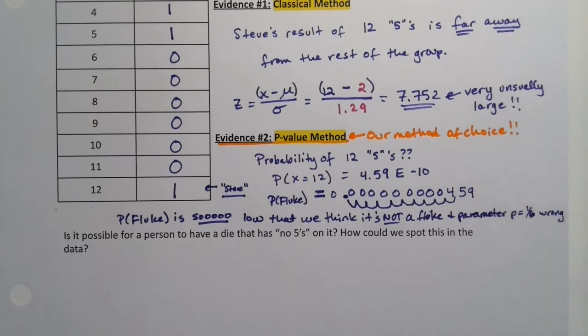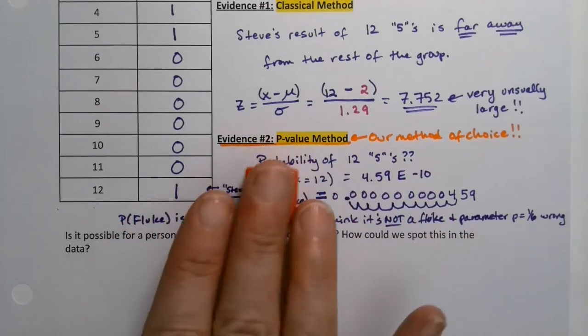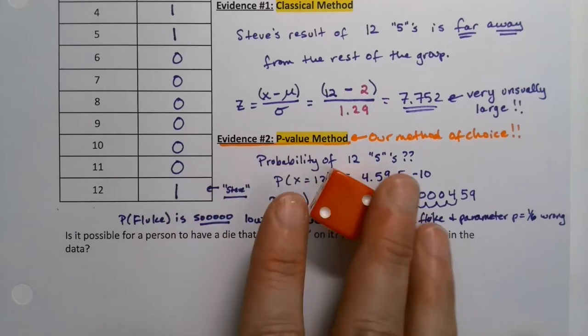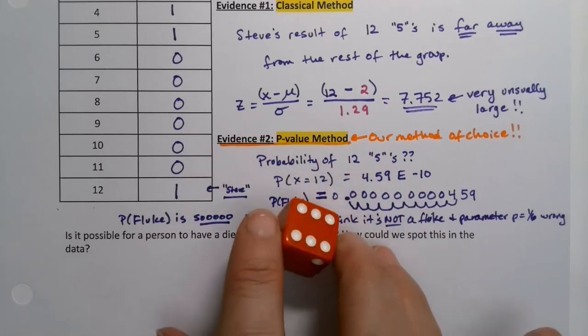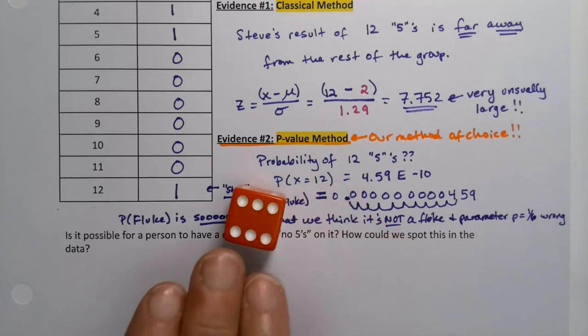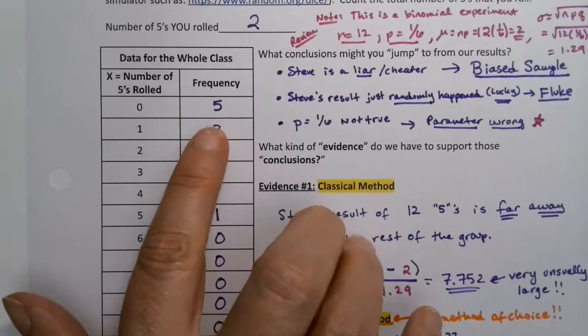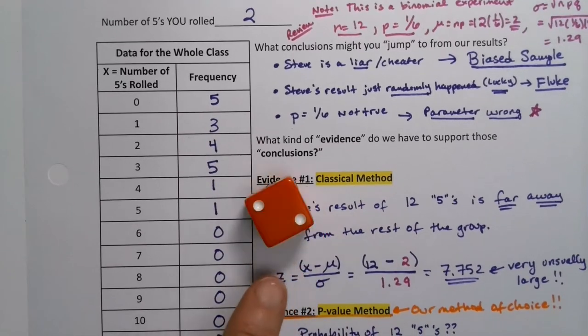Now is it possible that there was somebody in the room that did not have a 5 on their die? The answer is yes as a matter of fact. So I have often done this in class and there are times occasionally there's another die that is 1, 2, 3, 1, 2, 3 that I have and sometimes I'll give it to the students and they don't even realize their die is weighted, that they rolled no fives because they actually had a die that had no fives on it.